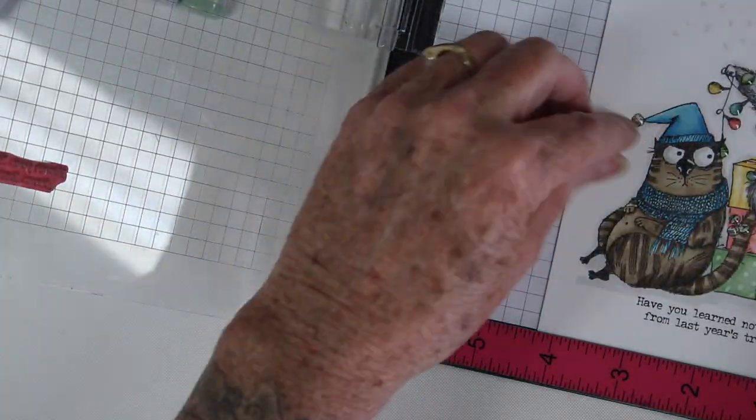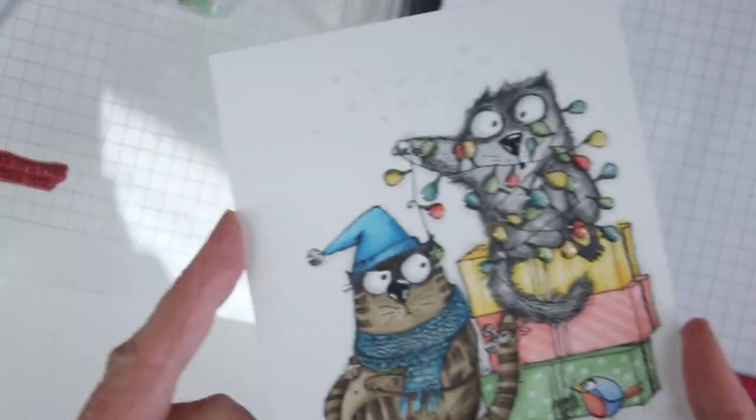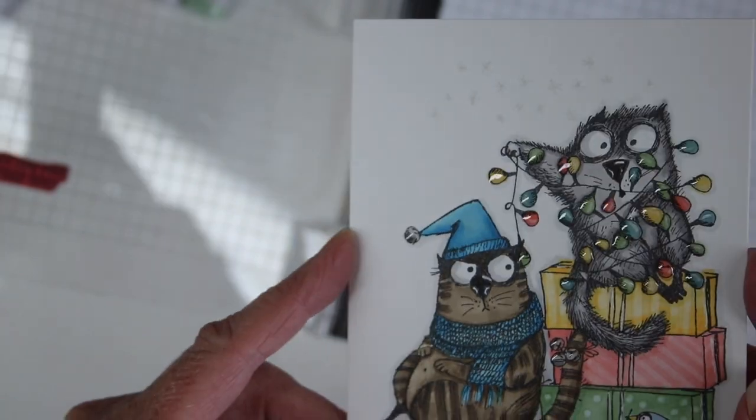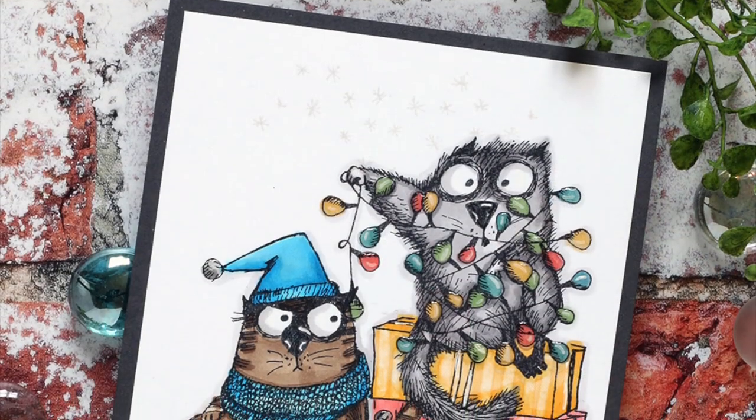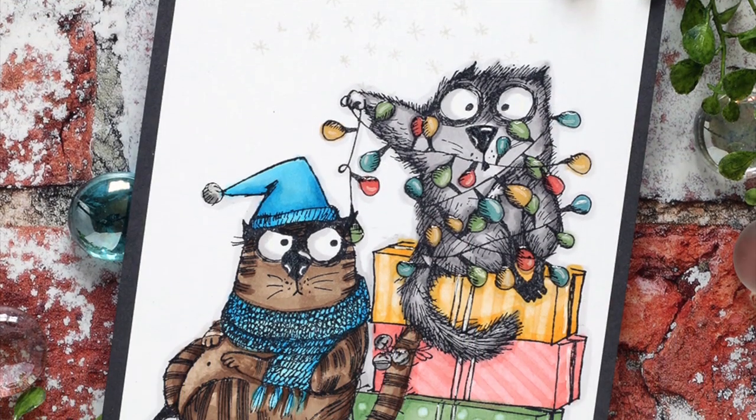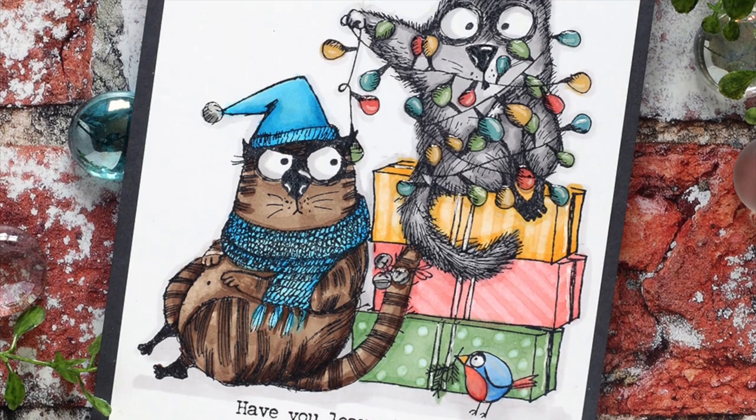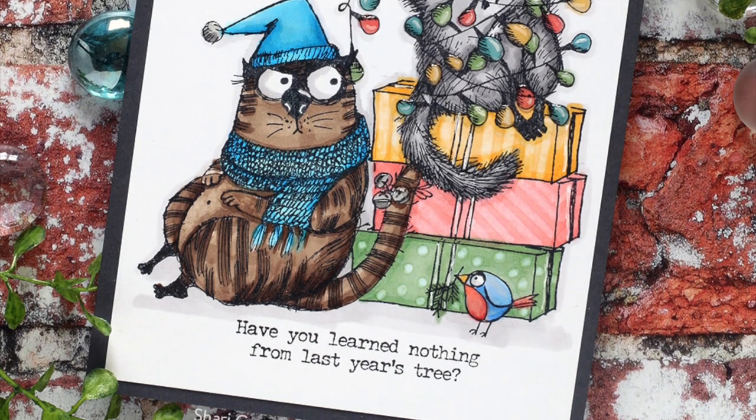And here's how this panel looks when I'm all done with my coloring and stamping. Super fun! I've also added a little bit of glossy accents to those Christmas lights and I've mounted this onto a slate piece of cardstock from Simon Says Stamp.